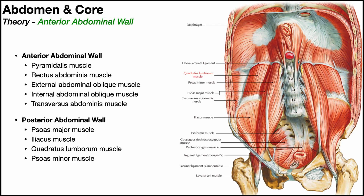Over the course of the next several videos in this playlist, we're going to be discussing the structures of the abdominal wall. We'll begin by looking at those belonging to the anterior abdominal wall, and then we'll switch gears and look at the posterior abdominal wall. The anterior abdominal wall is composed of five muscles. The first one is the pyramidalis, a minor one, and then the four larger ones are the rectus abdominis, the external abdominal oblique, the internal abdominal oblique, and the transversus abdominis.